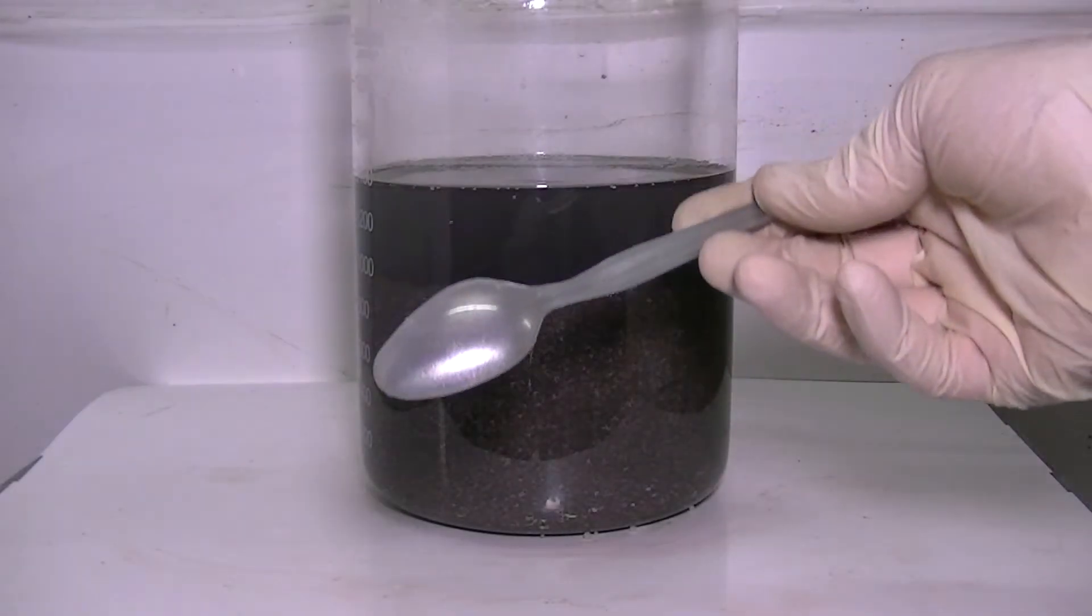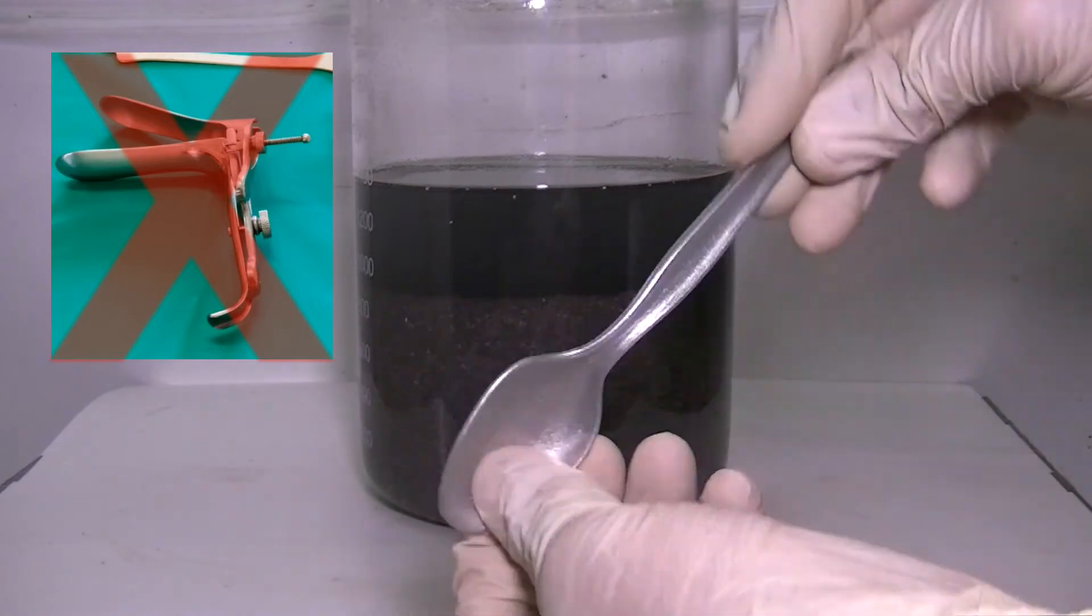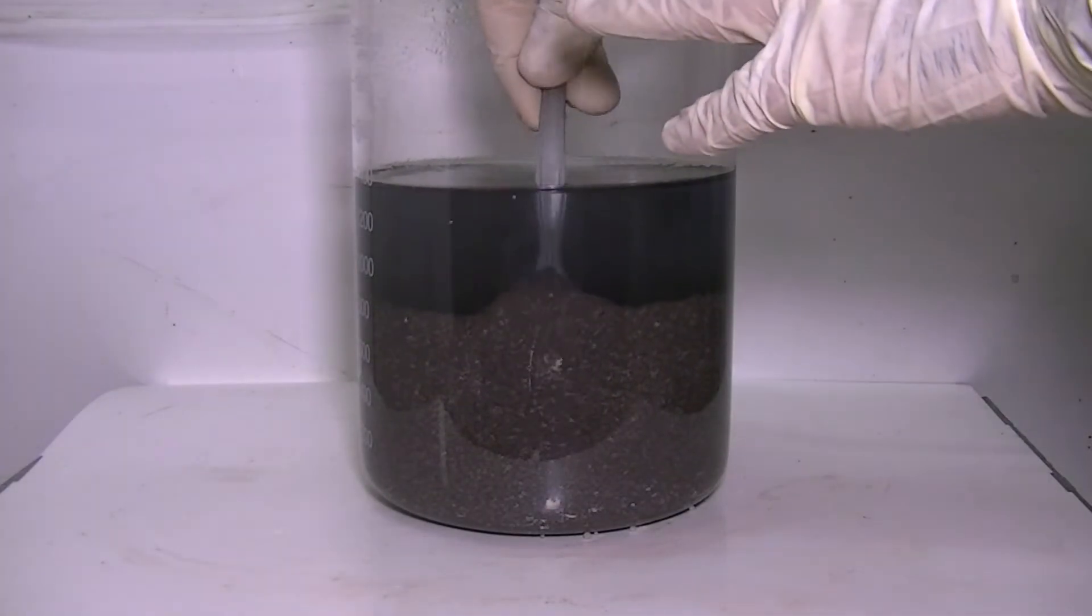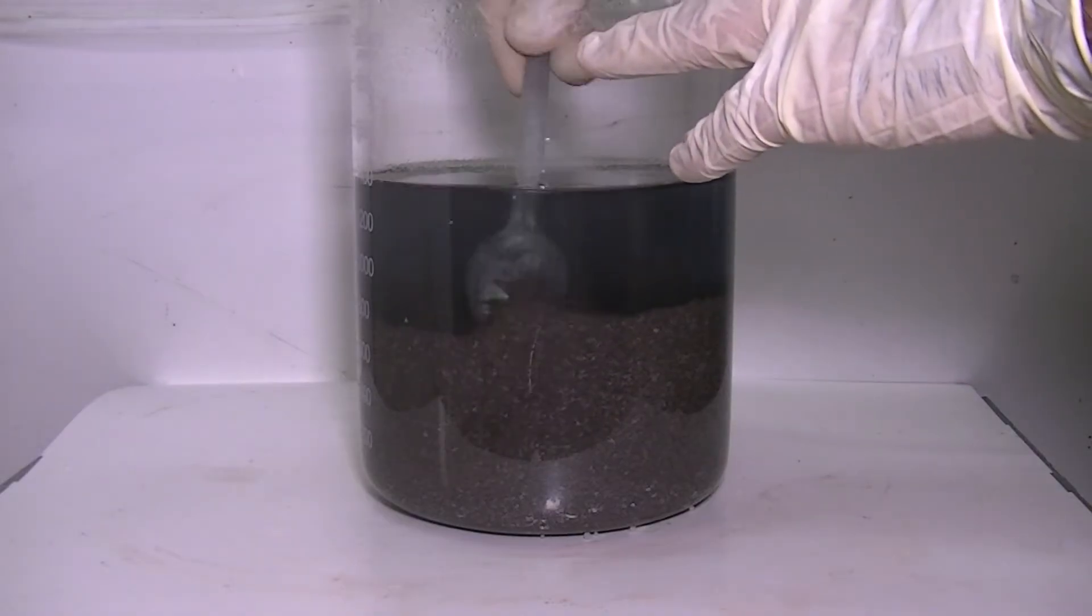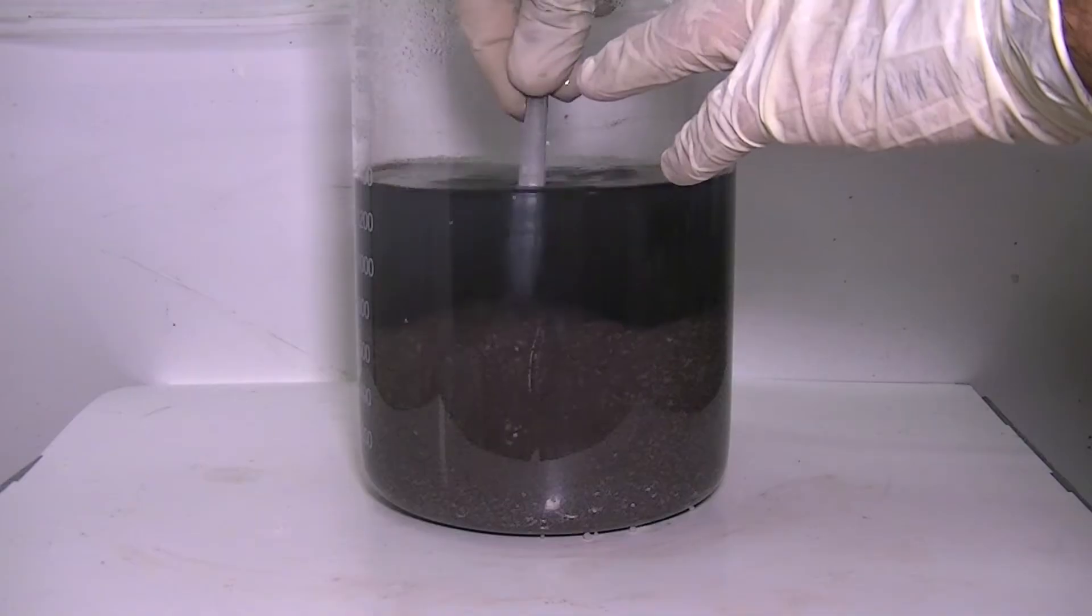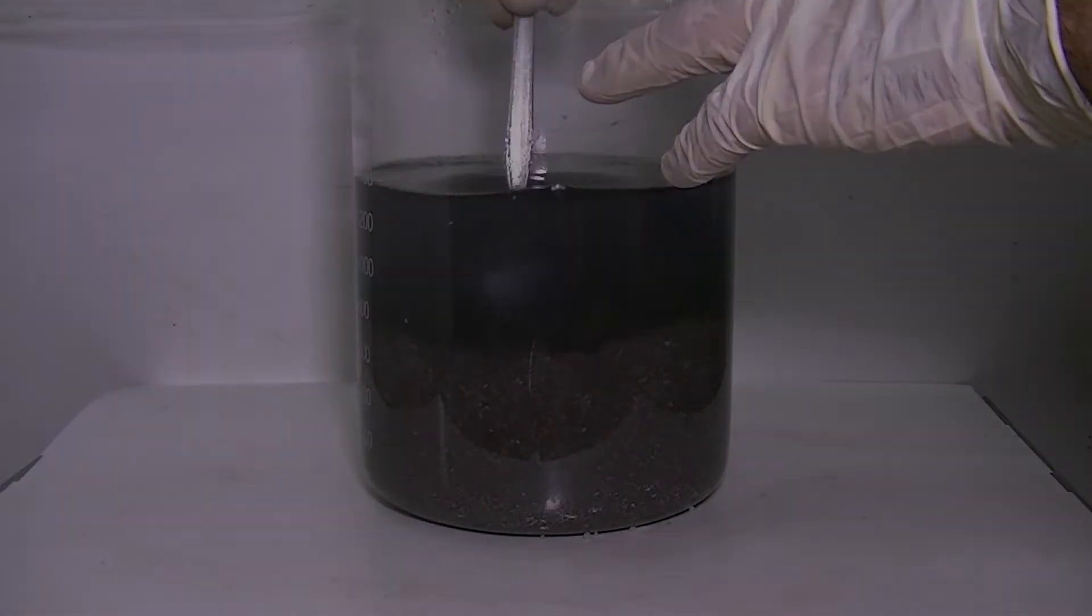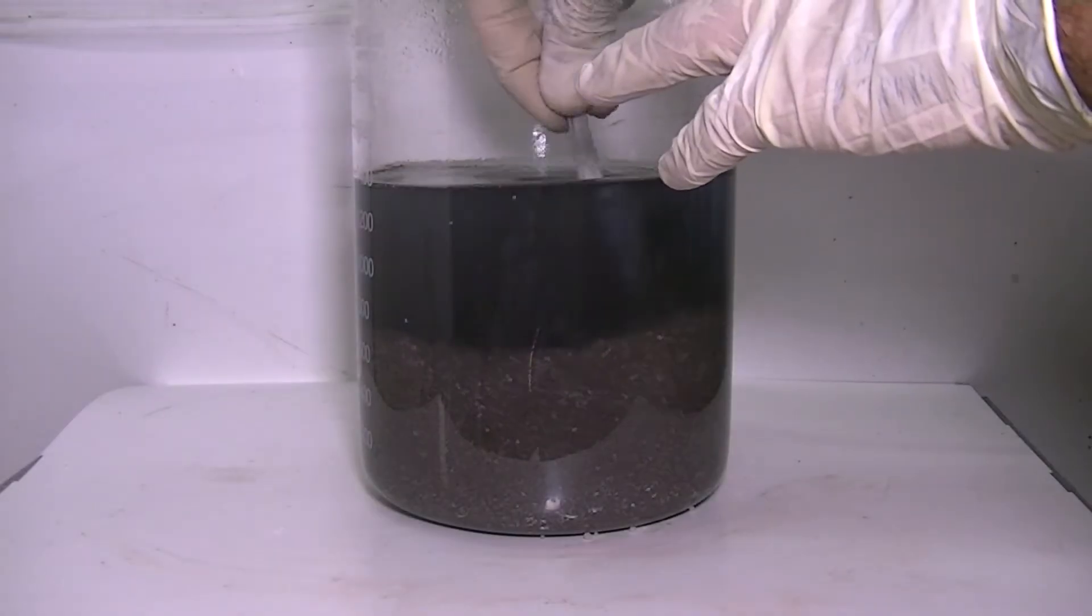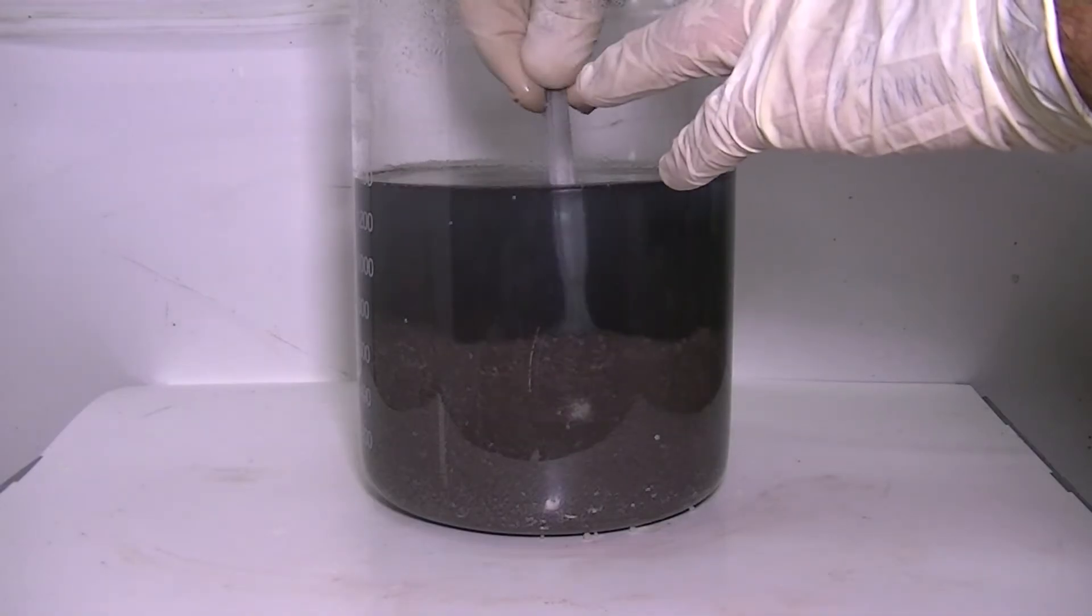Here I'm doing a smear test. I'm basically using a spoon to smear the silver oxide powder against the wall of the glass. If white streaks appear, it means that the conversion was not complete and more sodium hydroxide and stirring are needed. Here's a failed smear test. All right, it seems like the test is successful and there's no more silver chloride.